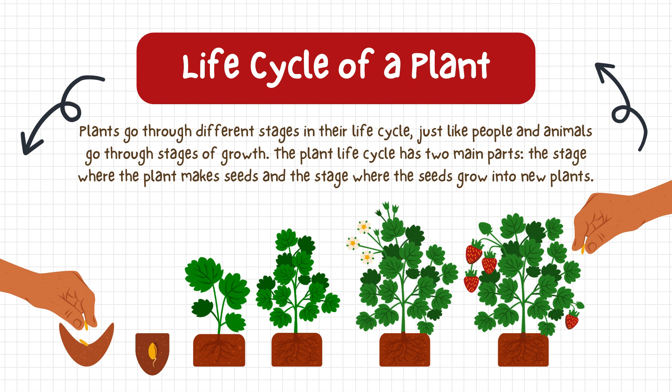Life cycle of a plant. Plants go through different stages in their life cycle, just like people and animals go through stages of growth. The plant life cycle has two main paths: a stage where the plant makes seeds, and a stage where the seeds grow into a new plant.